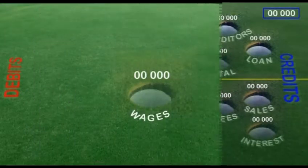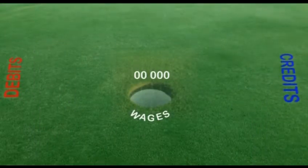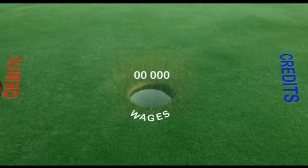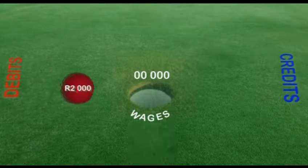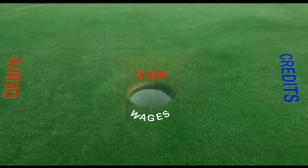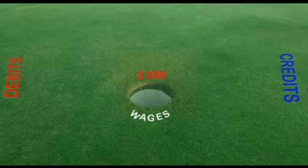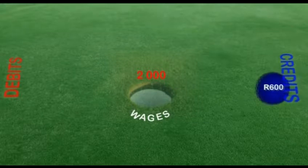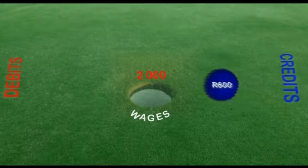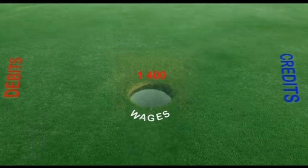Let's look at how these balances are calculated. If a red ball — a debit entry in other words — to the value of 2000 Rand has gone into a pocket, then the counter will change from zero to 2000 red. The red colour indicates that the balance is a debit. If a second ball goes into the same pocket — a blue one this time, so it is a credit — to the value of 600 Rand, then the counter will change to 1400 red.